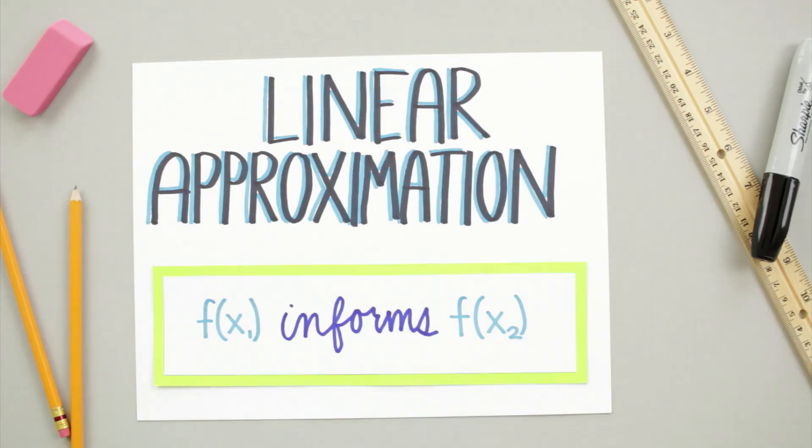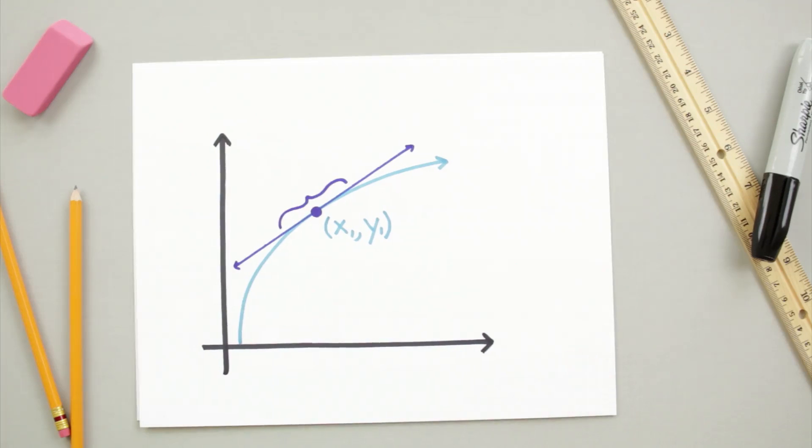Basically, we're using the fact that at a given point on a function, let's call it x1, y1, the tangent line at that point runs really close to parallel to the graph of the function for x values that are close to x1.